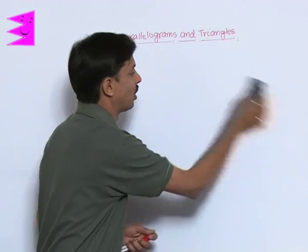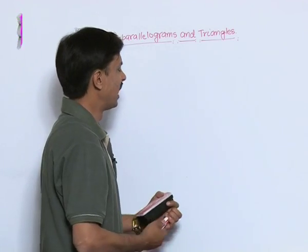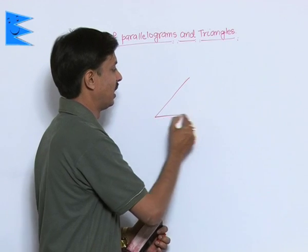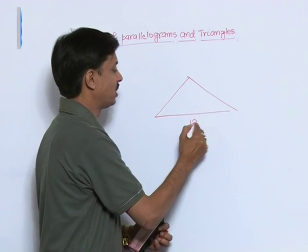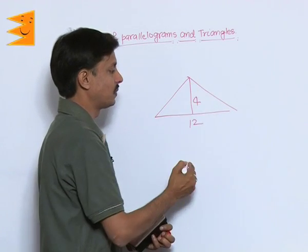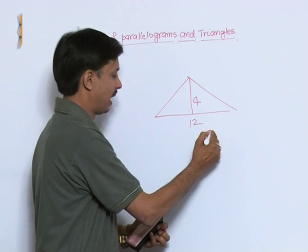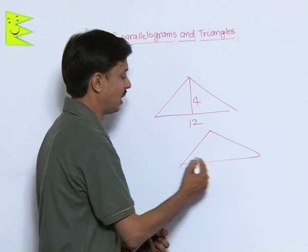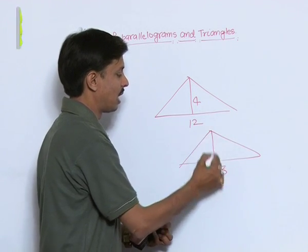As I can give you one example, that is, if there is a triangle like this, base is 12, height is 4. And another triangle can be, base is 8, height is 6.